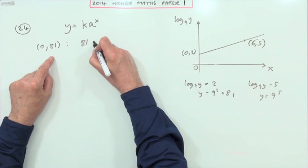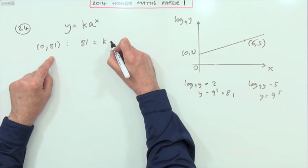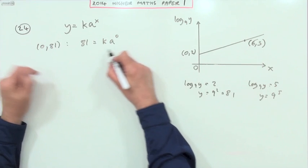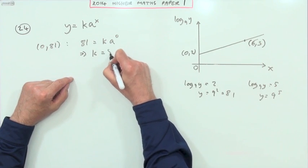So I could feed those in instead. Take this point here, so this is actually the point (0, 81). Put that in and you've got 81 equals k times a to the power 0. That's quite handy, a to the power 0 is just 1, so straight away I've got k equals 81.